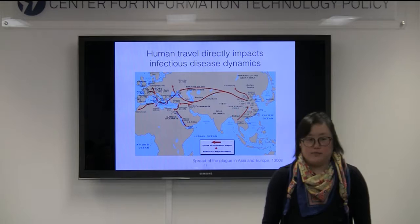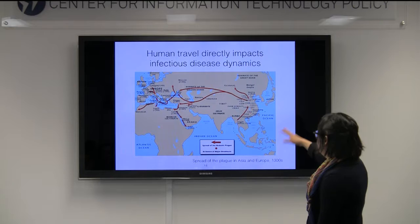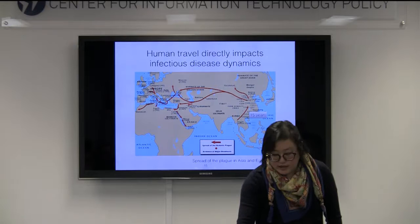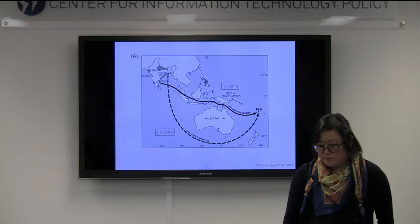But this is not a new problem. This is a map that shows the spread of the plague in the 1300s that started in Asia and then spread throughout Europe and Africa. One particular route took about 15 years to go from Burma up to China. So this has been happening for a very long time.